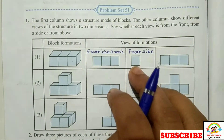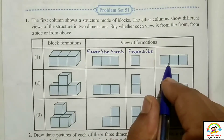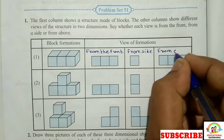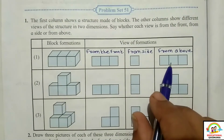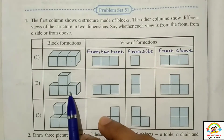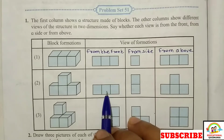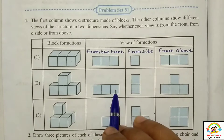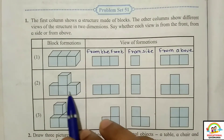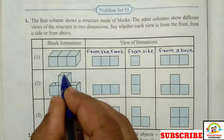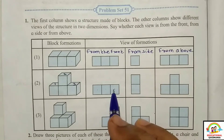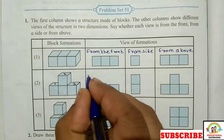From side. And this next view is from above. Now look at the second block formation. See the view given for it. Look at the first view — notice that when seen from the side, there is one row with one or two blocks visible. When seen from the front, four blocks are visible. And from above, one, two, three — here also three blocks are there, so this view is from above.